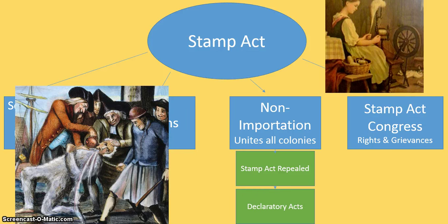In place of the Stamp Act, we get the Declaratory Act. This act is basically where Britain says they do have supreme authority over the colonies and can even tax them whenever they want. This is really Britain having the last say — repealing the Stamp Act but making clear: don't think you can get us to repeal every tax that we impose on you.